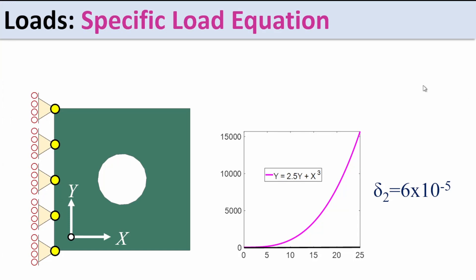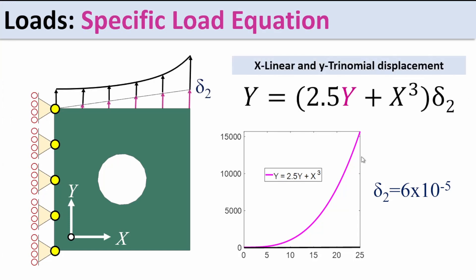For the next case, we combine a trinomial displacement with a linear varying displacement. The function is: a linear component of 2.5·y, and a trinomial component where the x-displacement is x cubed. At the maximum position this value reaches 15,000, so we multiply by 6×10⁻⁵ to bring it down to within a sensible two-millimeter displacement range. Let's go into Abaqus to demonstrate this.